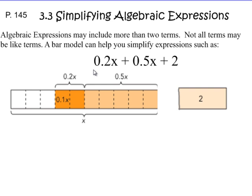The first example here is done in a bar model. Algebraic expressions may include more than two terms, and not all terms may be like terms. A bar model can help you simplify expressions such as 2 tenths x plus 5 tenths x plus 2. The dark orange represents the 2 out of 10 boxes, which is 2 tenths x. The lighter orange represents 5 out of 10 boxes shaded for 5 tenths x. And the separate bar represents the 2 as in 2 whole units.